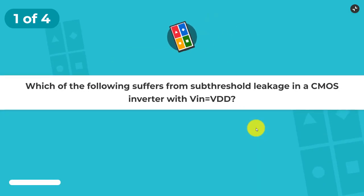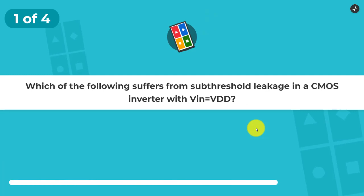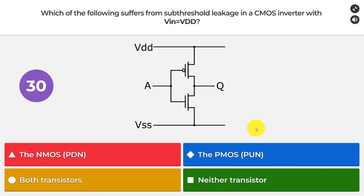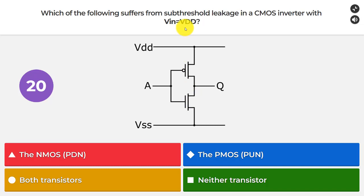This short Kahoot will only have four questions. The first one is: which of the following suffers from sub-threshold leakage in a CMOS inverter with VIN equals VDD? This is our inverter over here. We have the input A and the output Q, a PMOS pull-up and an NMOS pull-down. Which of the two is leaking when we have VIN equals VDD — is it the NMOS, the PMOS, both transistors, or neither transistor?